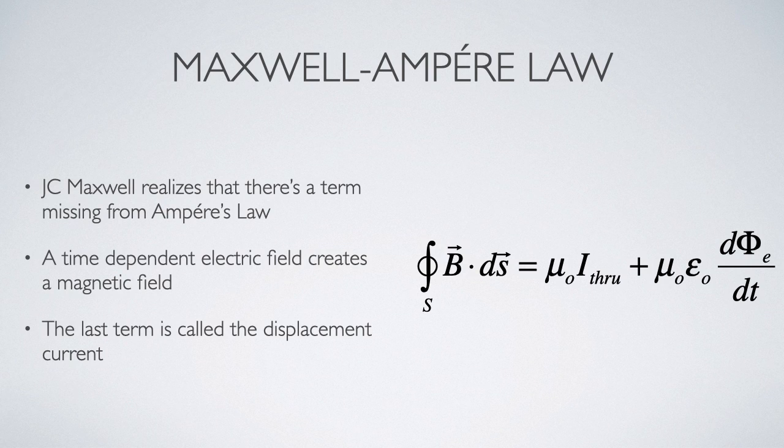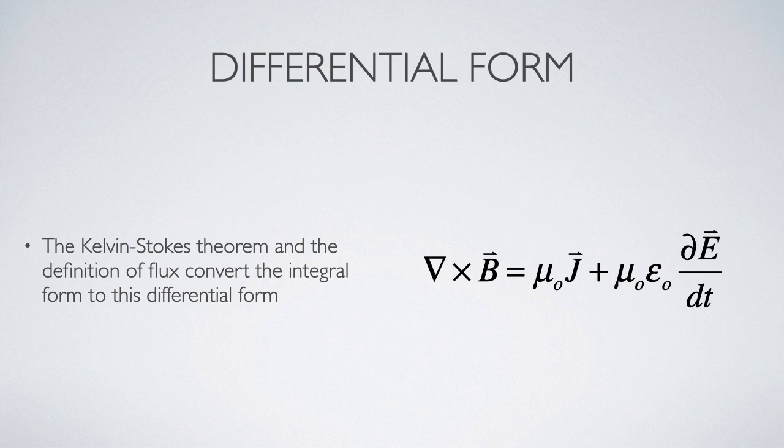Previously when we studied Ampere's law, we talked about the path integral of B being equivalent to the magnetic field constant μ₀ times the current passing through the area bounded by that path. Now we had the second term called the displacement current, which is related to the rate of change of flux through that area. Applying the Kelvin Stokes theorem gives us this differential form of Ampere's law, sometimes referred to as Ampere-Maxwell's law.